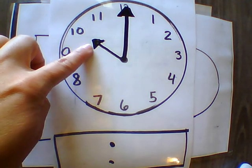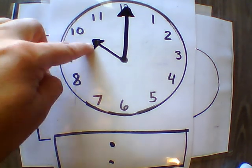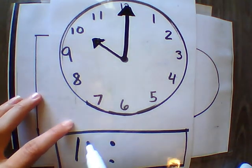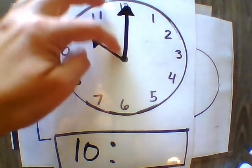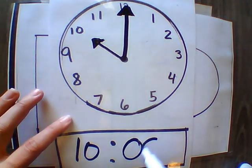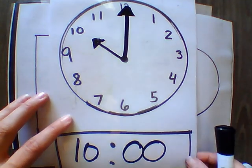All right. So I look at my hour first. The smaller one goes first. The hour hand, 10. And my larger hand, the minute hand, is pointing at the 12. So it's double zero. So my time is 10 o'clock.